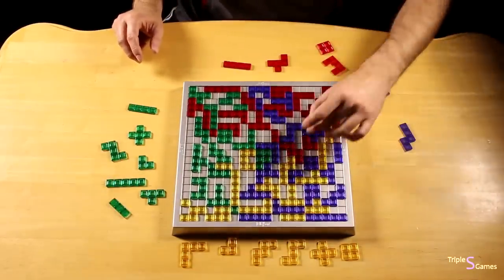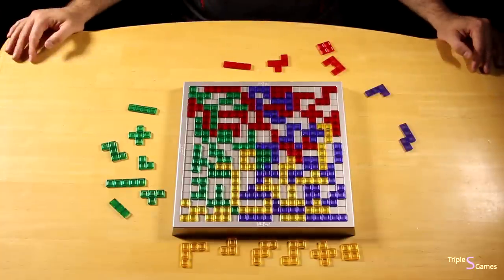If the last piece you play is the small one-square piece, even if you have other pieces you couldn't play, you get a bonus of plus 5 points.